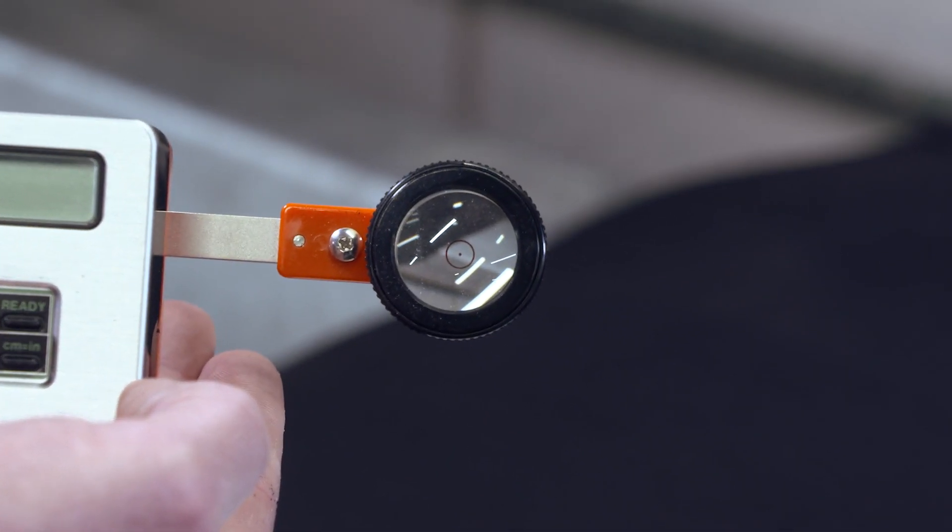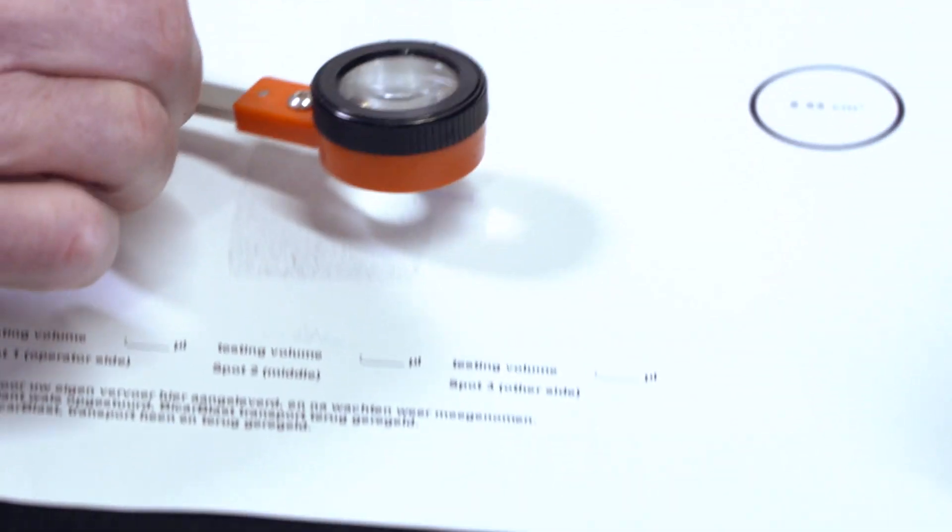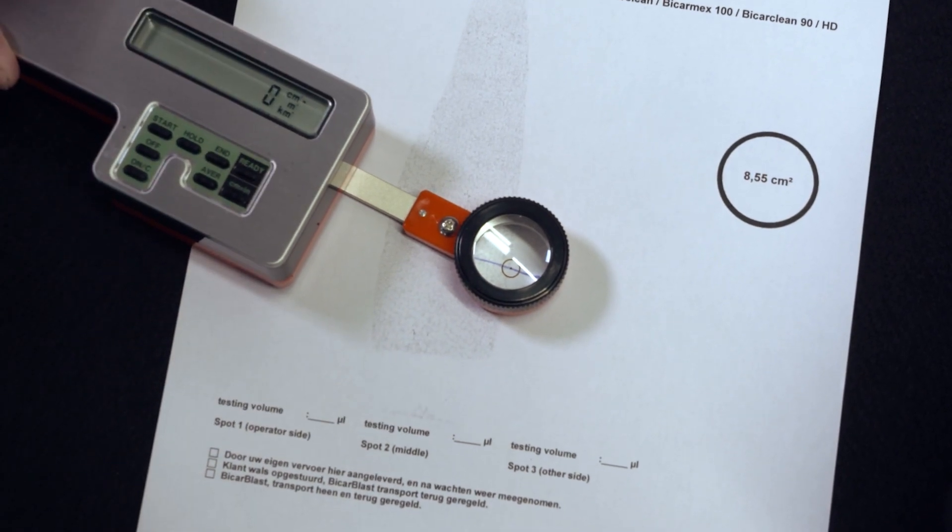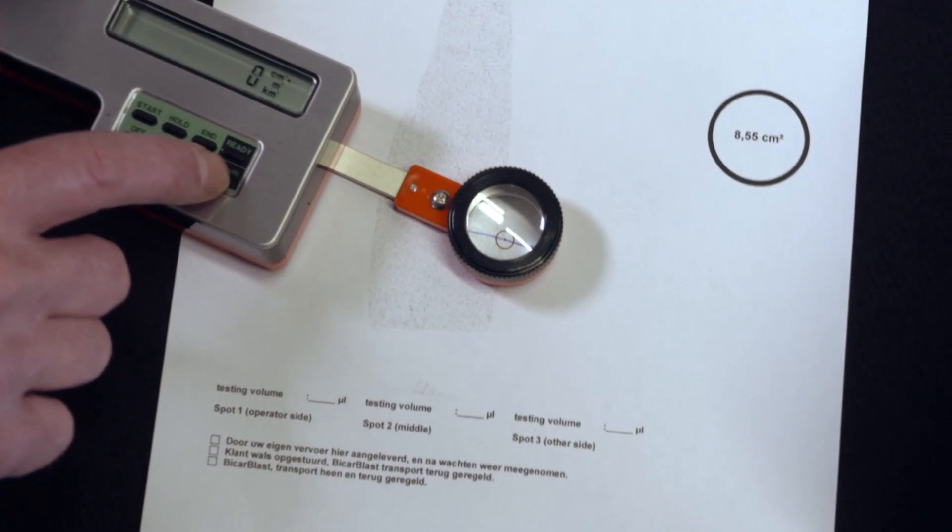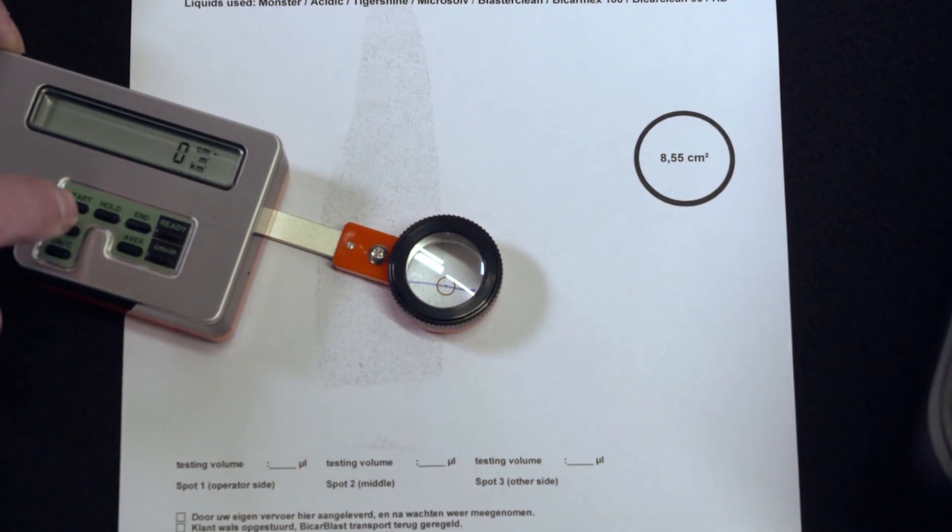As you can see, the lens of the planimeter has a dot in the middle. Place this dot on the start point of the blot of ink and turn the planimeter on. The device will be set to square centimeters, but you can change it to square inches using this button. For now we will be using square centimeters.